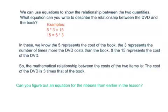We can use equations to show the relationship between the quantities. Here's some that you could have said. You could have said 5 × 3 = 15 or 15 = 5 × 3. In those, we know that the 5 is talking about the cost of the book and the 3 represents the number of times more the DVD costs than the book. The 15 represents the cost of the DVD. Notice how I put those numbers together in that equation. Equation where it has two sides separated by an equals sign. Equation has equal as the root to the beginning letters. Same. So the mathematical relationship between the costs of the two items is the cost of the DVD is three times that of the book. Make sure that you get that.